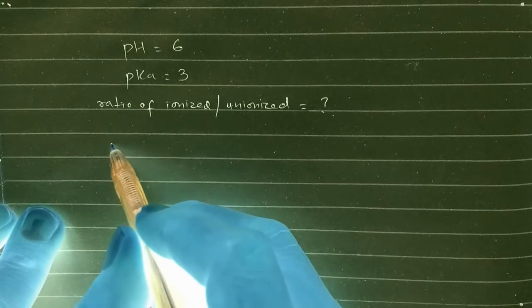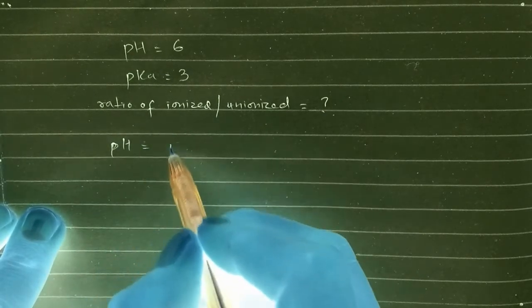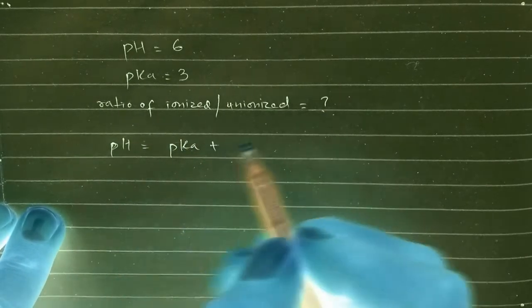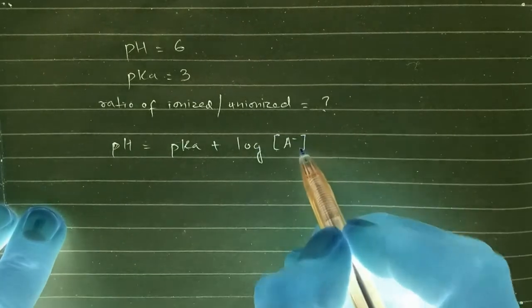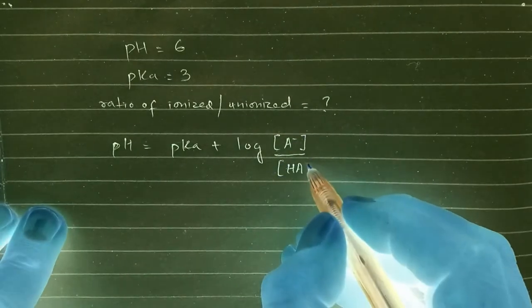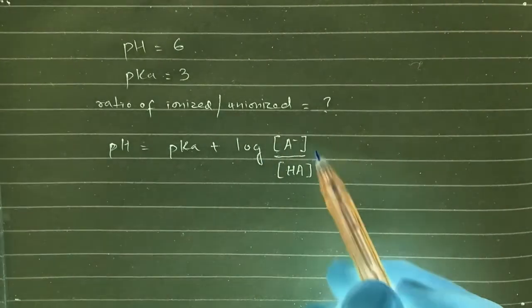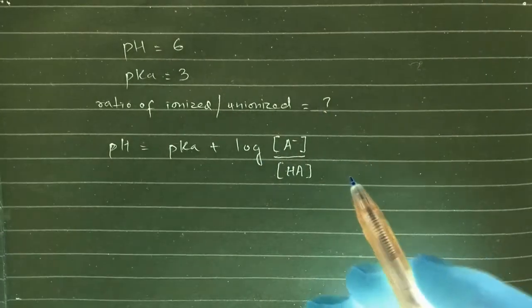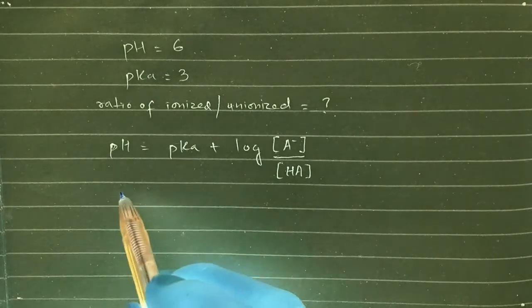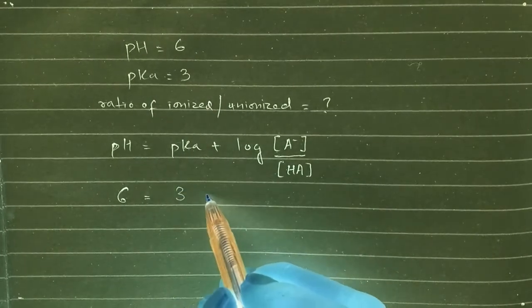Now this can be solved by using Henderson-Hasselbalch equation, which is pH equals to pKa plus log of [A-] divided by [HA]. So this equation can be used to solve this calculation problem. So our pH given is 6 while the pKa value given is 3.